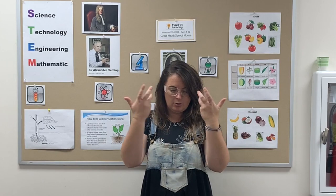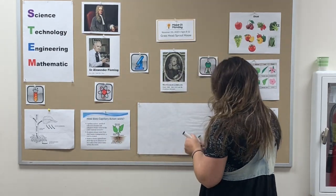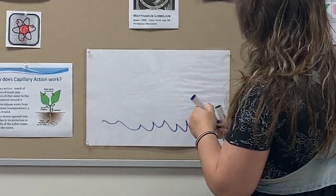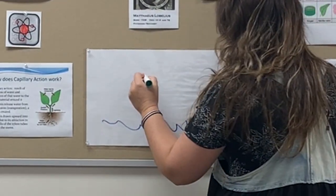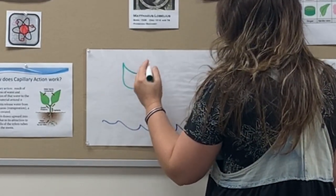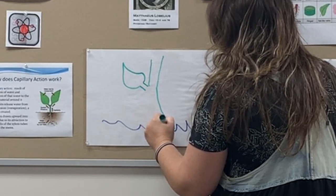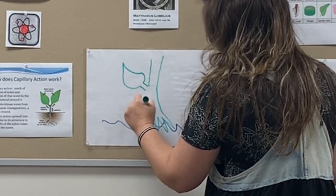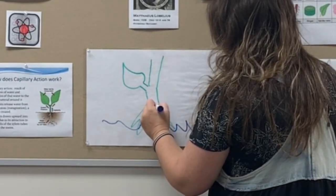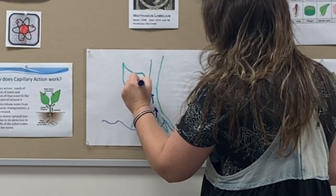It's pulling it in, almost like a continuous suction. So I'll kind of draw it — this is my water and I want it to go into this leaf. How it gets there, it has to go through the stem and then into the roots. And that drawing of water up is the capillary action.